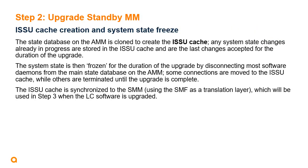Once the data plane configuration is frozen, ISSU clones the system state database on the active module to create the ISSU cache. Any state changes already in progress when ISSU was started are stored in the ISSU cache and are the last changes accepted until the upgrade is complete. At this point, the system state is frozen for the duration of the upgrade by disconnecting most software daemons from the main system state database on the active module. Some connections are moved to the ISSU cache while others are terminated entirely until the upgrade is complete. The ISSU cache is then synchronized to the standby module using the schema migration framework as a translation layer.